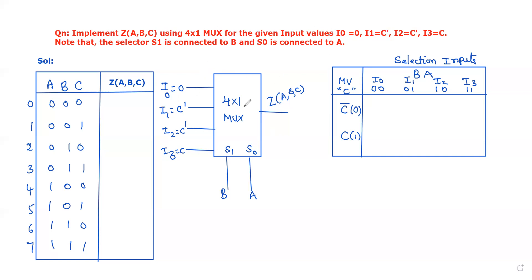Depending on the given data, first let us draw the block diagram. This is a 4 by 1 multiplexer. 4 by 1 means it should be written in the form of 2 power 2 by 1, which means two selection inputs we have: S0 and S1. Now we should assign the variables for these two selection inputs according to the given data as B and A. S1 connected to B, S0 connected to A. And the given inputs are I0 equal to 0, I1 equal to C dash, I2 equal to C dash, and I3 equal to C.